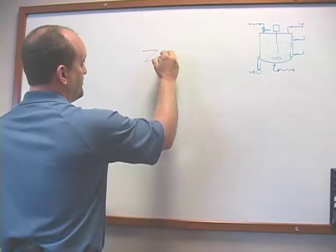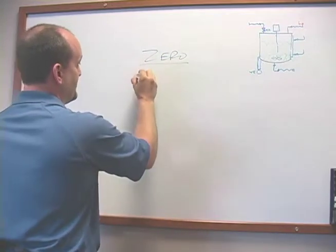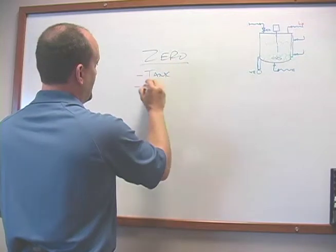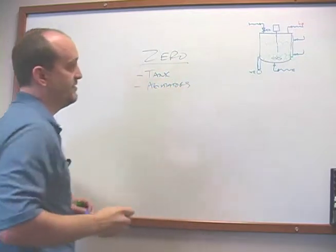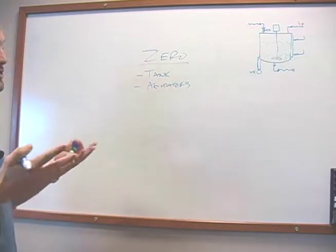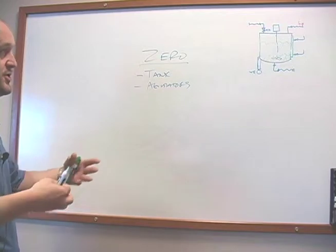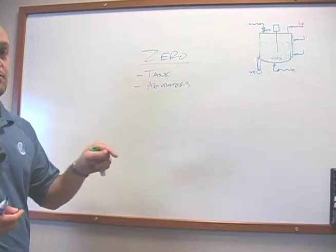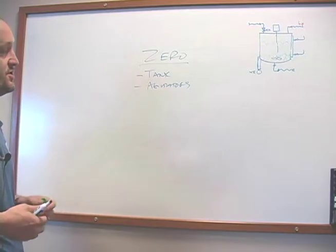So when we zero, you're negating your tank and agitators and anything else that you don't want to measure. So once all that stuff's on there, there's no fluid in the tank. Your load cell measures 2,000 pounds. You hit zero. It's just like taring out a scale in a shipping department. That's what zero is.